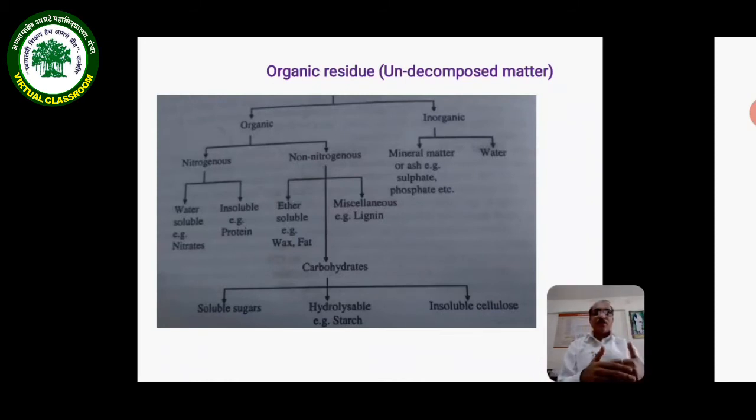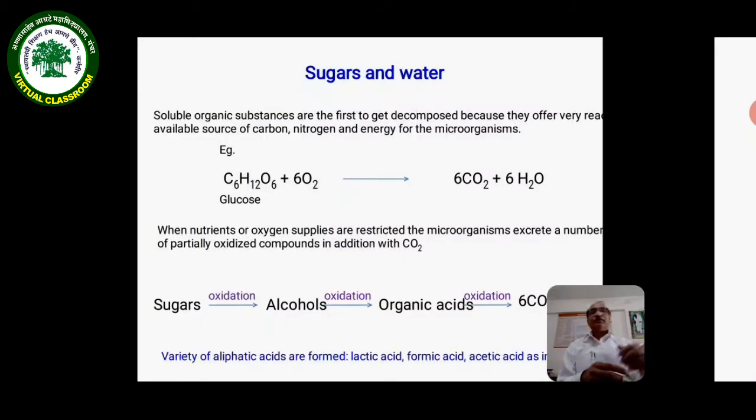Soluble organic substances are the first to get decomposed because they offer a very readily available source of carbon, nitrogen, and energy for the microorganisms. An example is glucose.